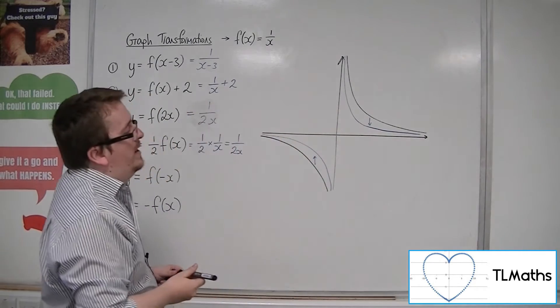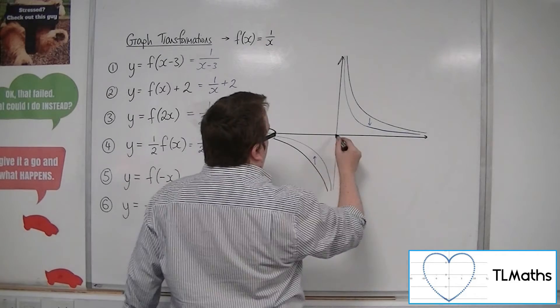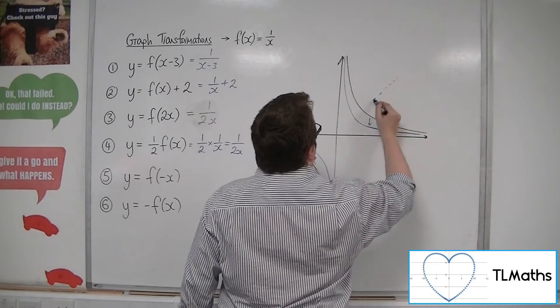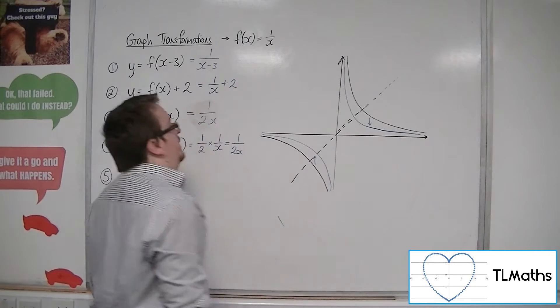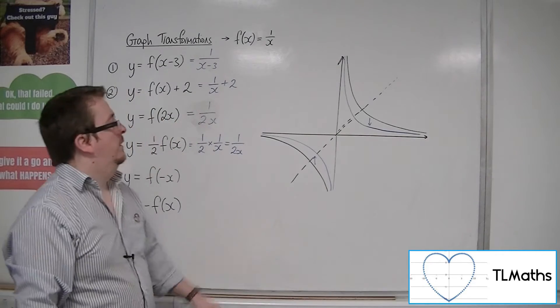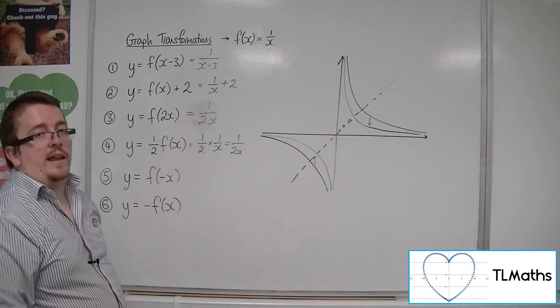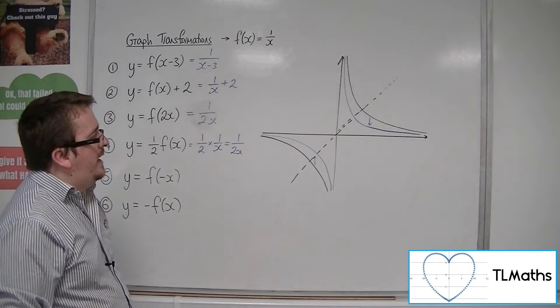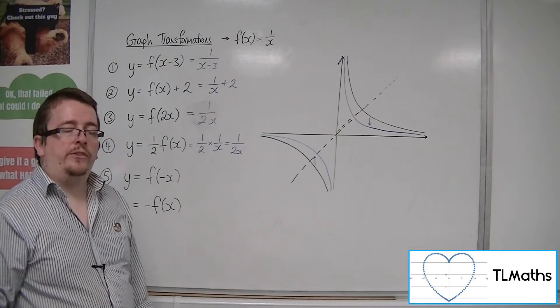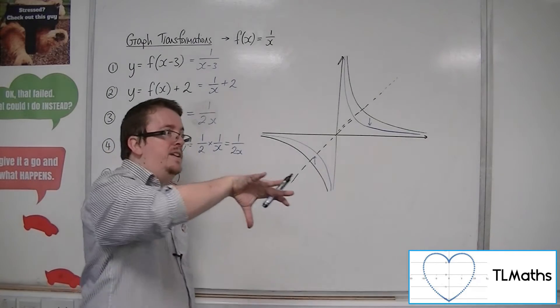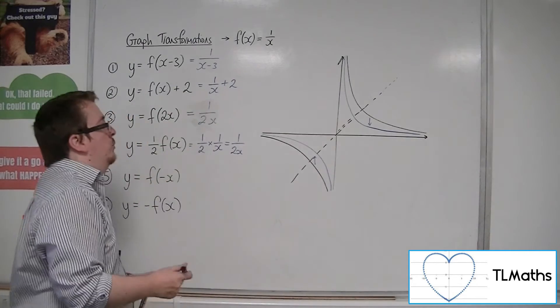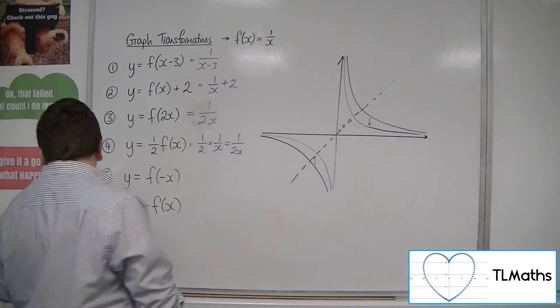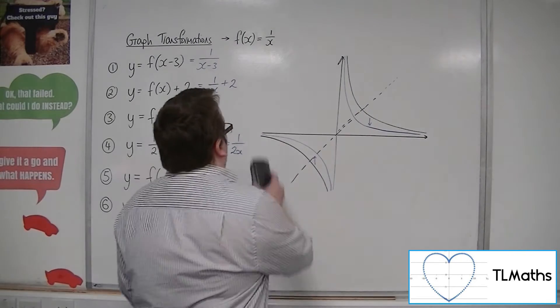And this is really because 1 over x is a reflection of itself in the line y equals x. So really, halving the x-coordinates should end up being the same curve as halving all of the y-coordinates. So, that's number 4.